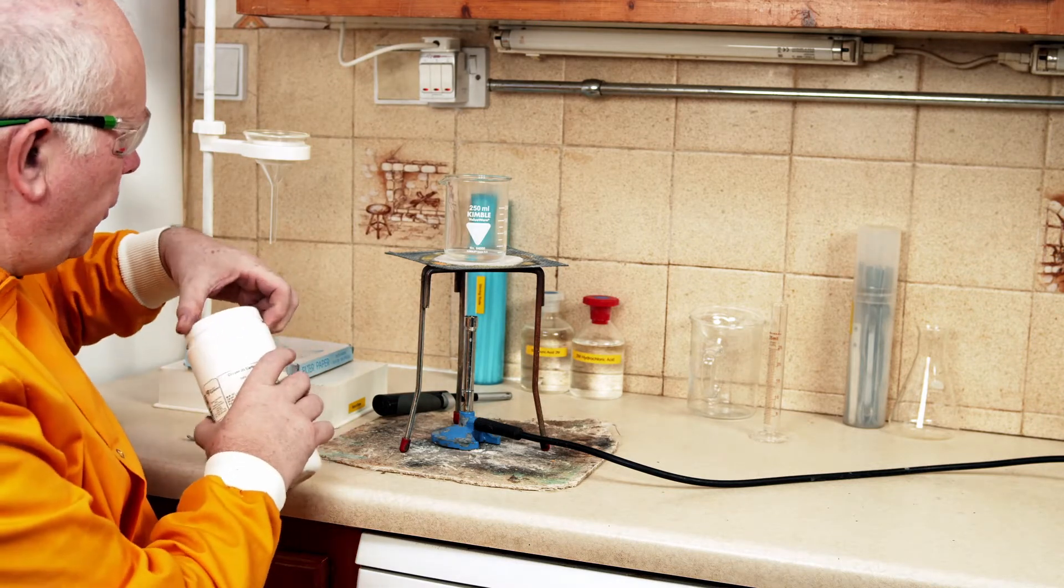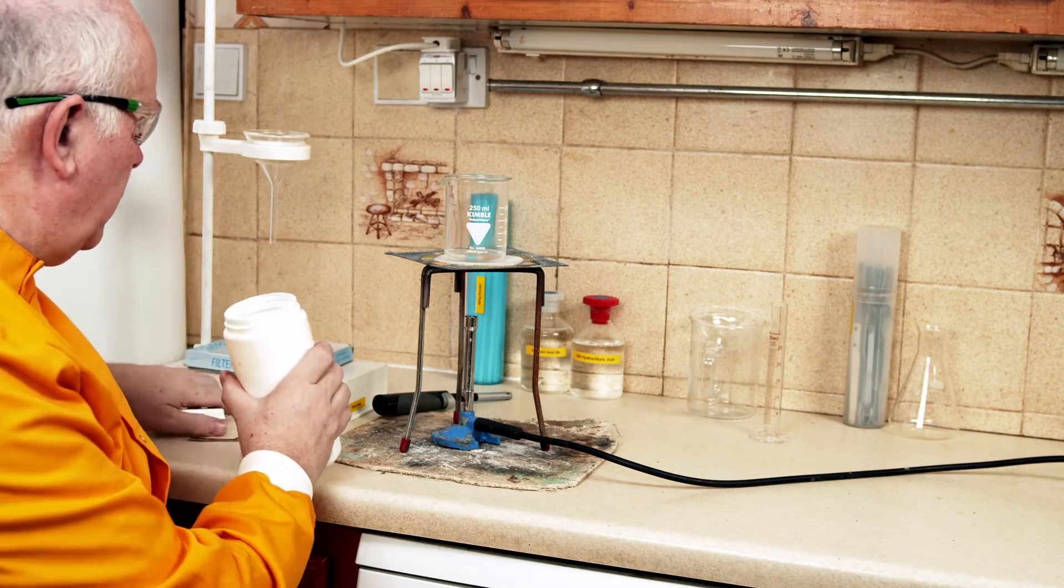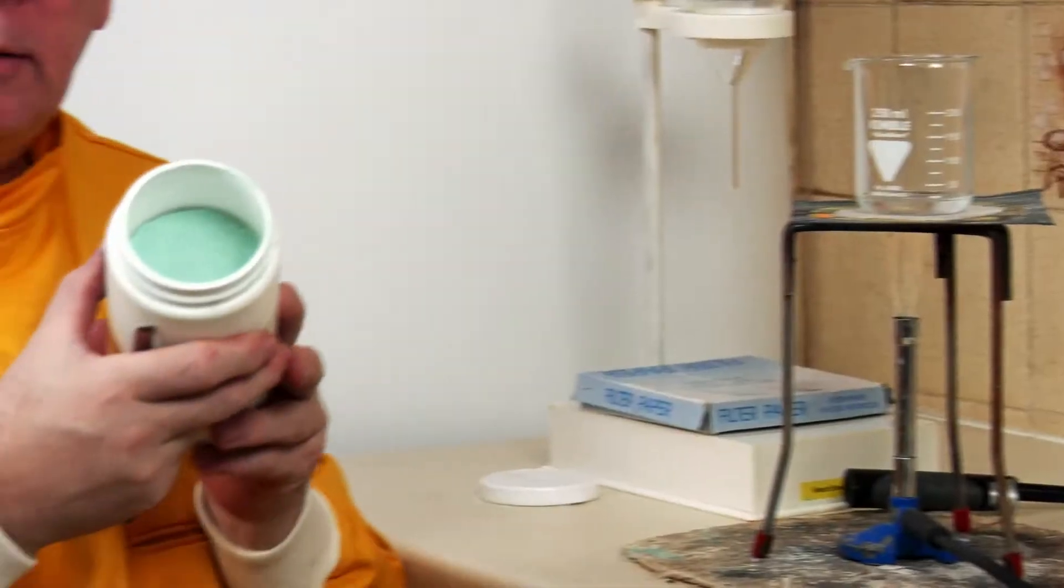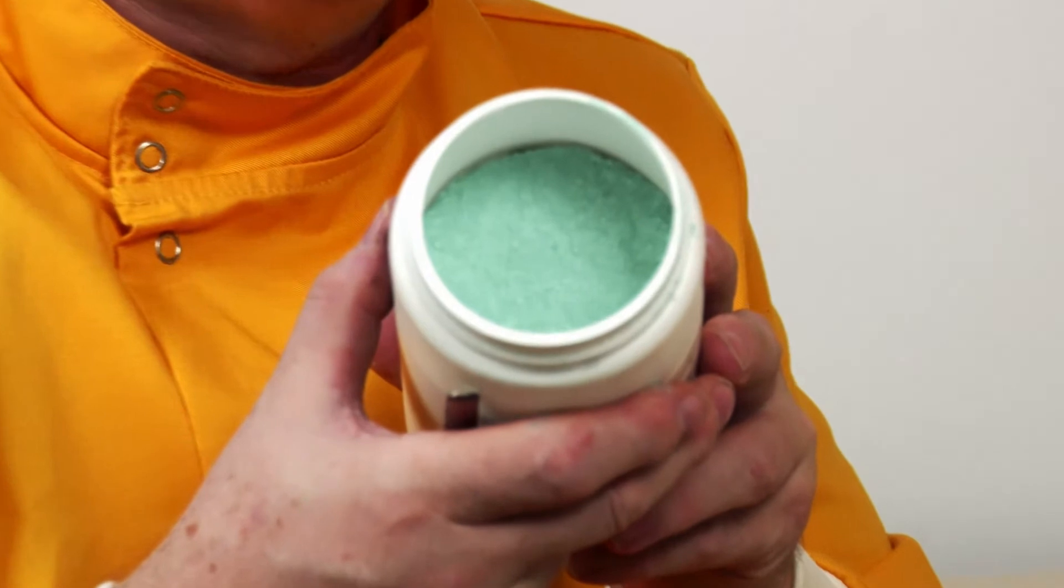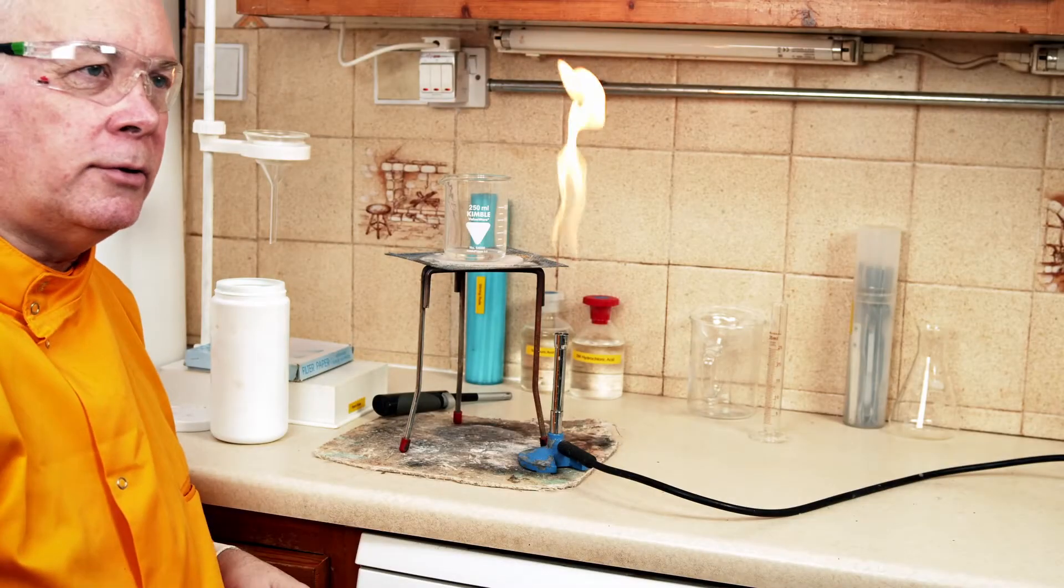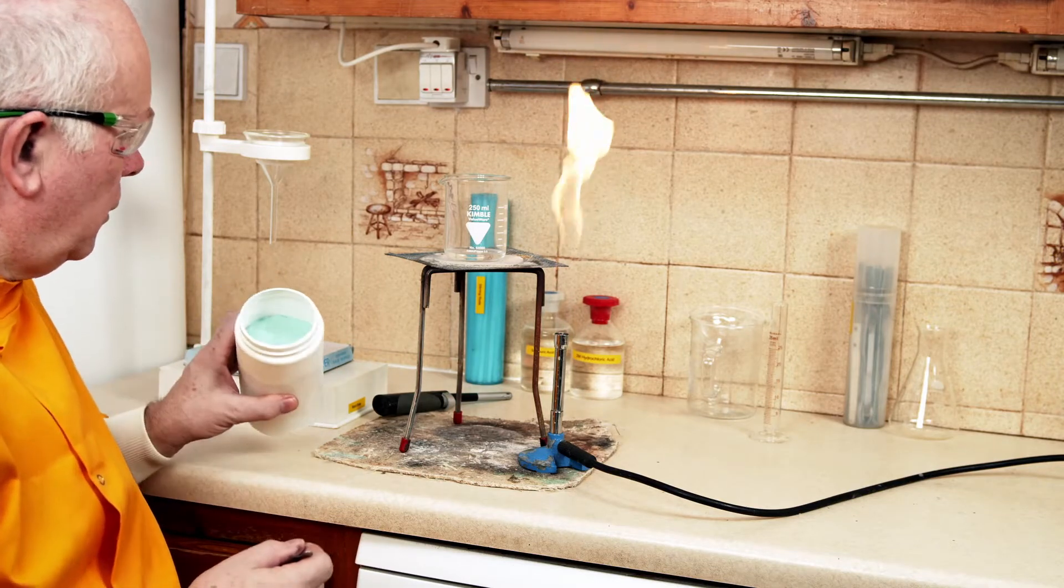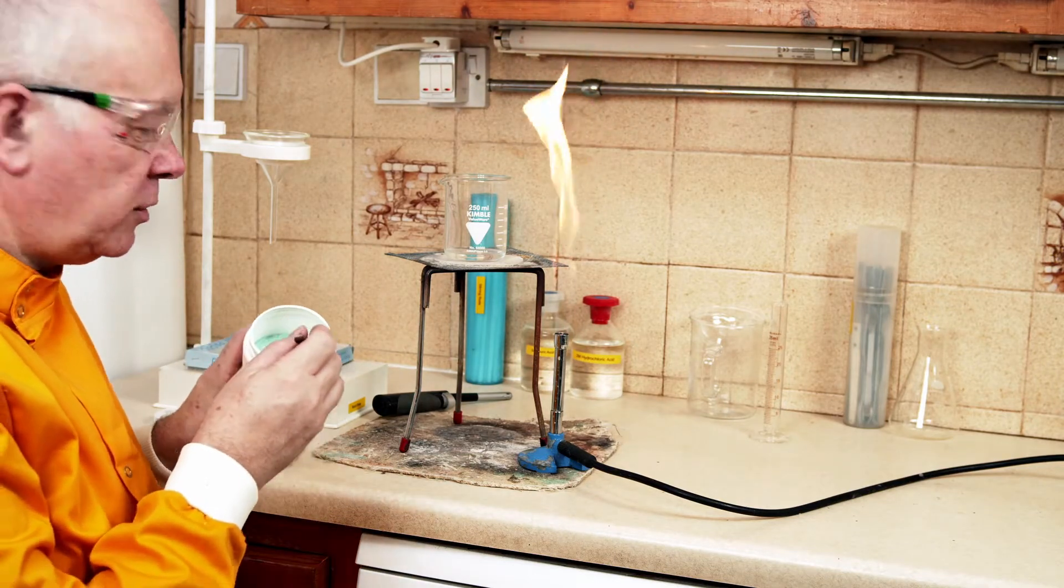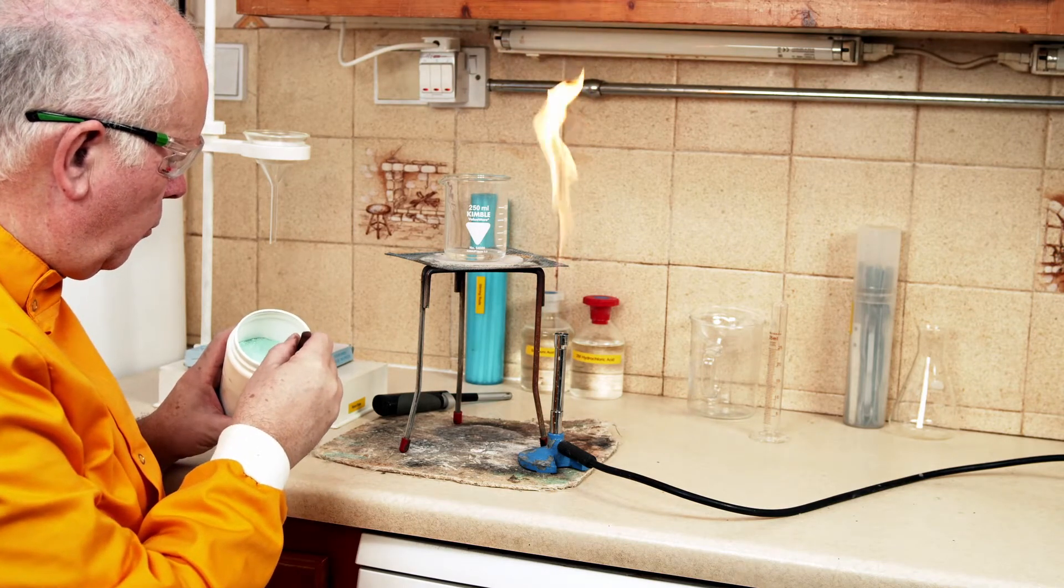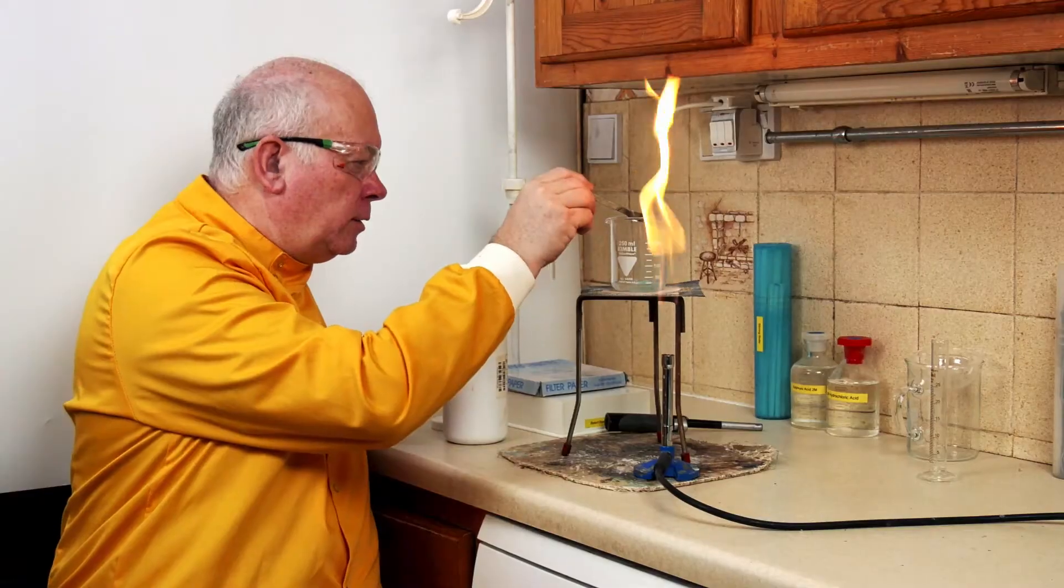Now I'm going to put in the copper carbonate a little bit at a time. Now this is a beautiful color substance, this sort of green color. When we add this to an acid we're going to produce carbon dioxide and water. So let's just add a small amount here to the acid.